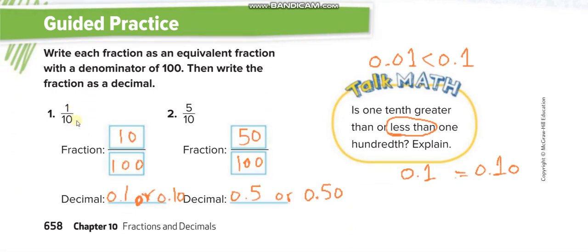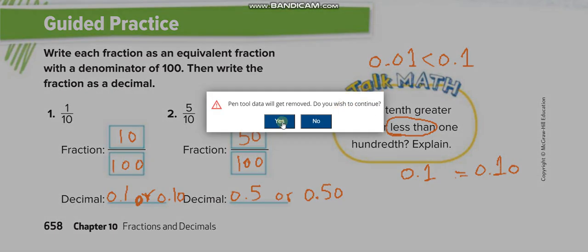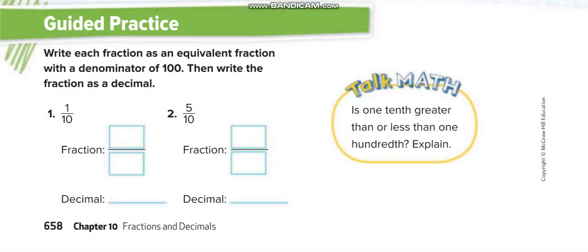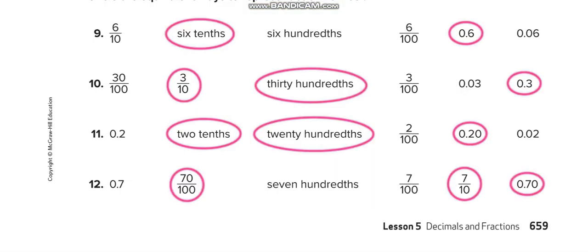1 over 10, we can write it as 10 over 100. 5 over 10, 50 over 100. The decimal for this is 0.1. The decimal for 5 over 10 is 0.5, and for 50 over 100 is 0.50.